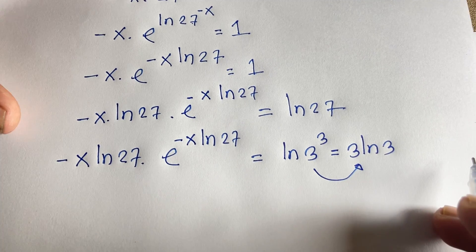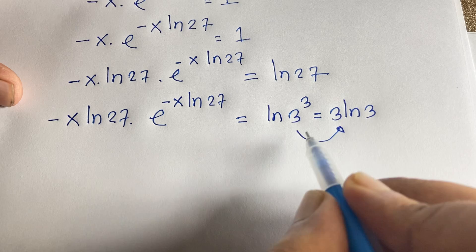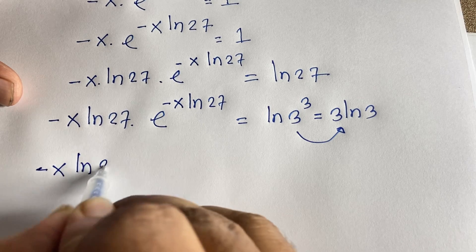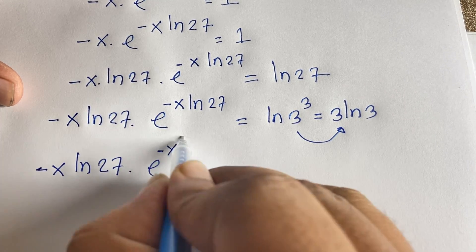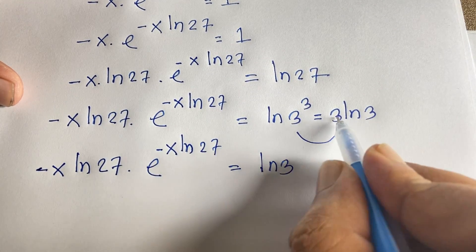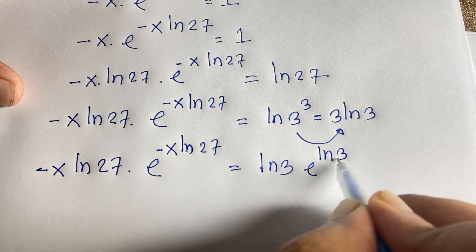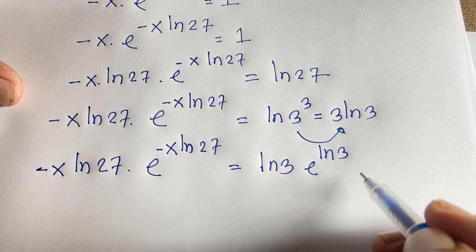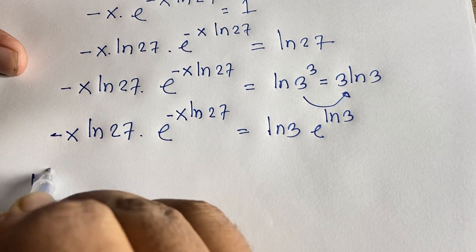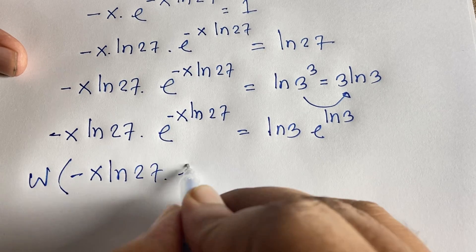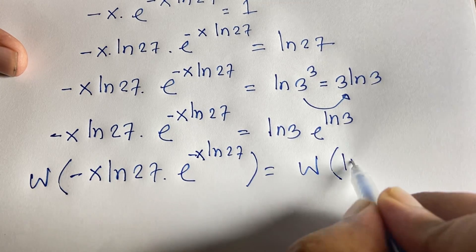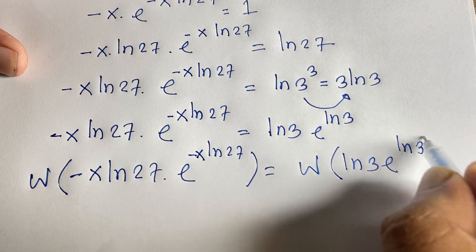I rewrite 3·ln3 as ln3 · e^(ln3), using the identity e^(ln a) = a, so 3 = e^(ln3). The equation now reads: (-x · ln27) · e^(-x · ln27) = ln3 · e^(ln3). Both sides are in the form a · e^a, so I apply the Lambert W function.